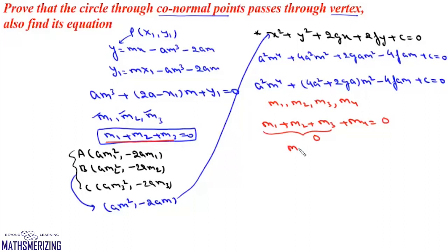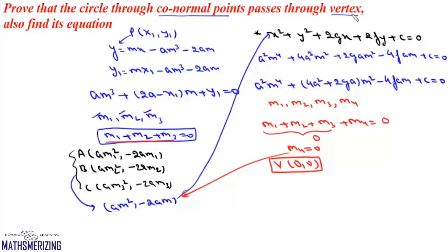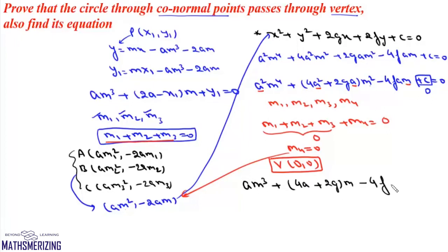We know that m1 + m2 + m3 are slopes of normals drawn from the same point, so m1 + m2 + m3 = 0, which gives m4 = 0. If we put m4 = 0, we get one of the points through which this circle passes, which is (0, 0) — the vertex of the parabola. So the circle through co-normal points passes through the vertex. Putting c = 0 and taking am common from the equation gives am³ + (4a + 2g)m - 4f = 0, whose roots are m1, m2, m3.